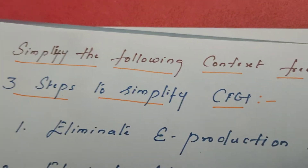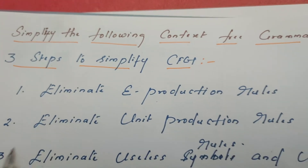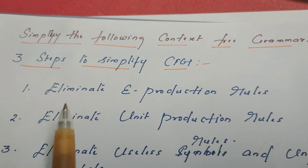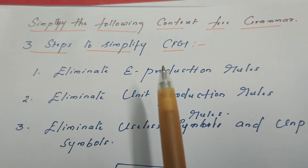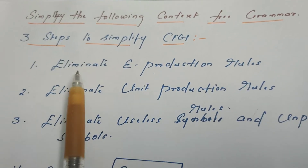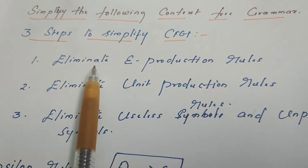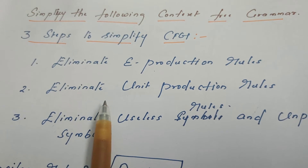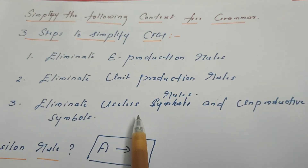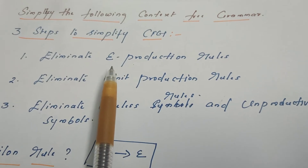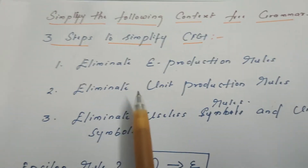Today in this video, let's continue the topic: simplification of context-free grammar. In my previous video, we already discussed how to eliminate epsilon production rules to simplify the grammar. In fact, there are three steps: elimination of null productions or epsilon rules, elimination of unit rules, and elimination of useless rules and unproductive symbols.